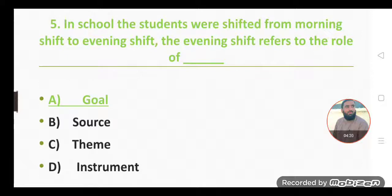Evening shift, the students shifted to. Where they shift to is called goal, and where they shift from is called source. Like in this sentence, evening shift is the goal and morning shift is the source. But the question is about evening shift, so option A is the correct option.